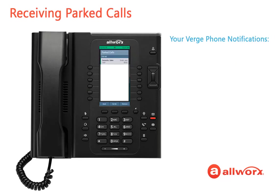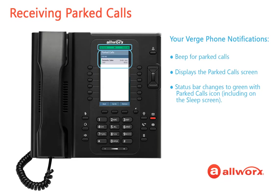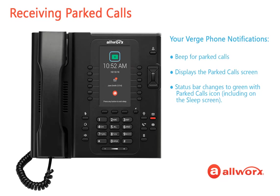If someone else parks an active call to your extension, your Verge phone plays an audible notification unless your phone is set to Do Not Disturb. The Verge phone screen displays a list of Parked Calls with your Parked Calls at the top of the list, and the phone's status bar changes to green with the Parked Call icon displayed. If your Verge phone is in Sleep mode, the green notification bar and the Parked Call icon display on the Sleep screen.